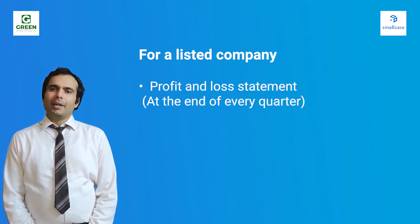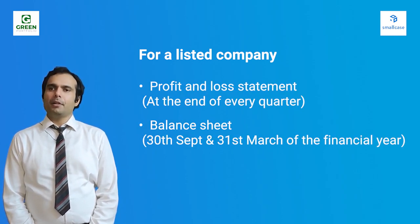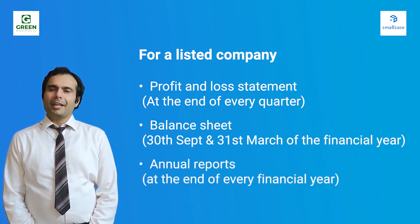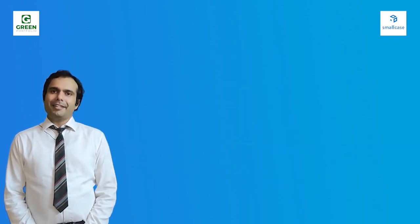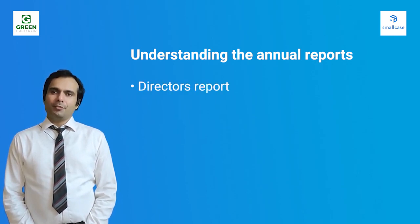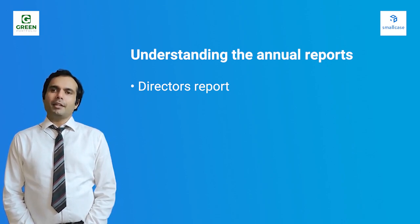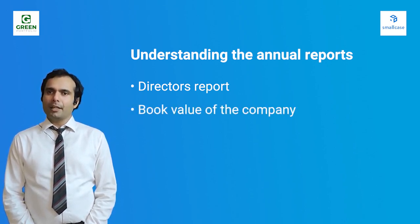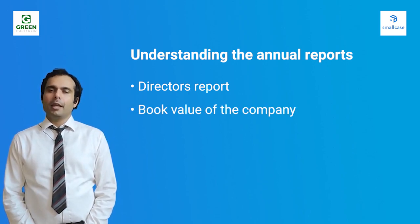For a listed company, you get the profit and loss account at the end of every quarter. You get balance sheets at the end of every 30th September and 31st March of the financial year. You also get annual reports at the end of every financial year, which give you a lot of insights as an investor. From annual reports, you get the director's report, which tells you what the directors think about the business. You also get details on the book value of the company, which helps you understand whether the company is undervalued or overvalued.